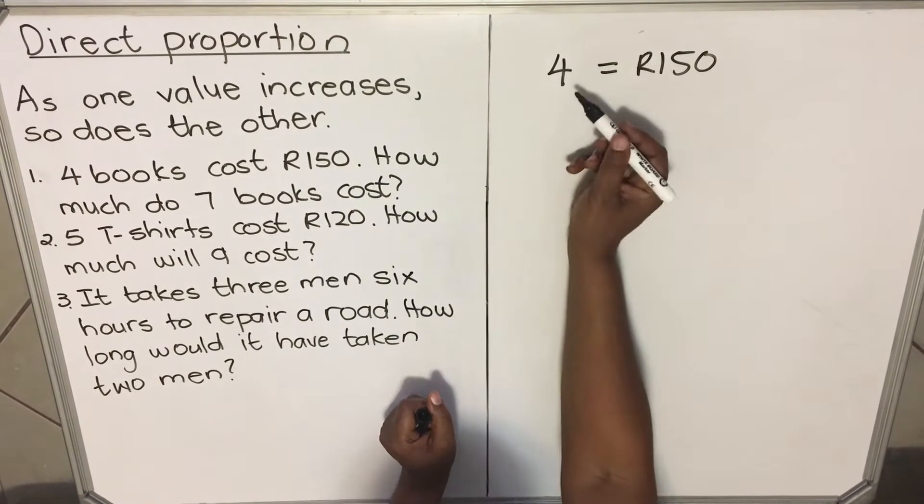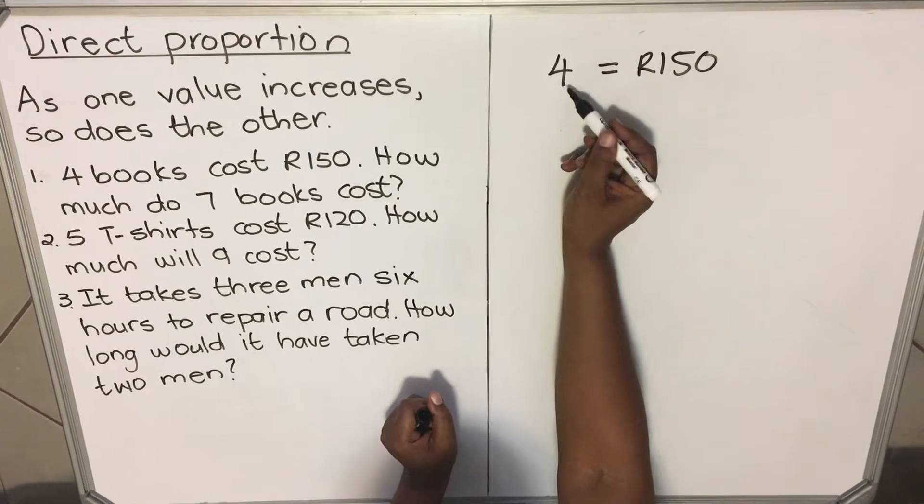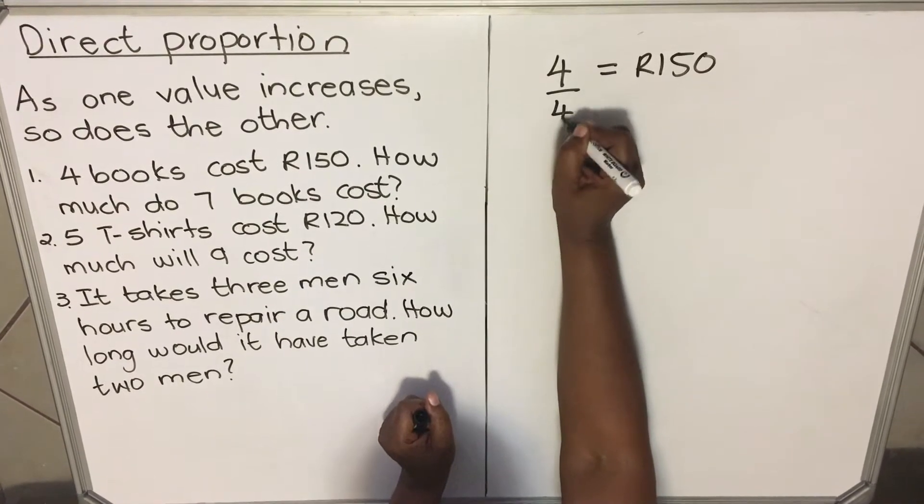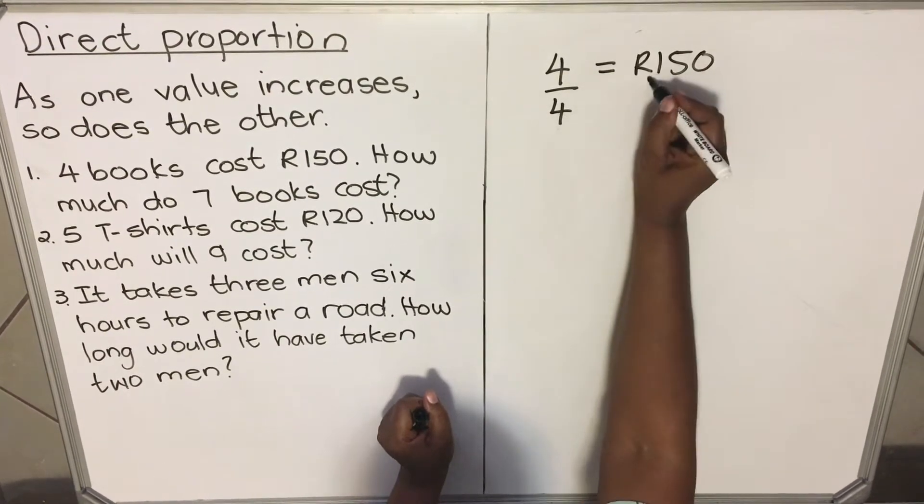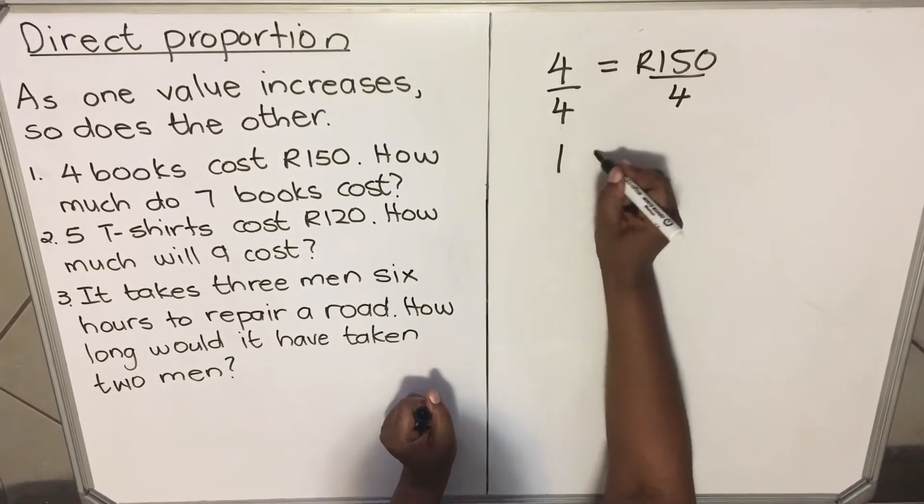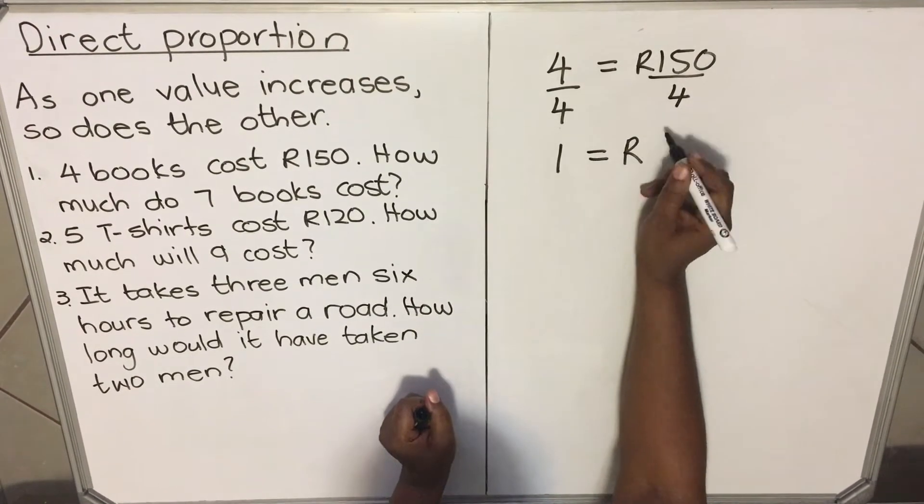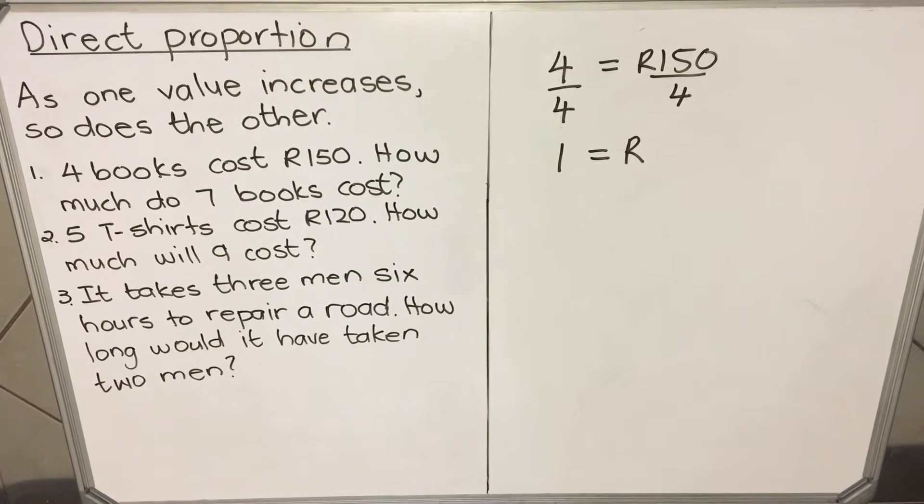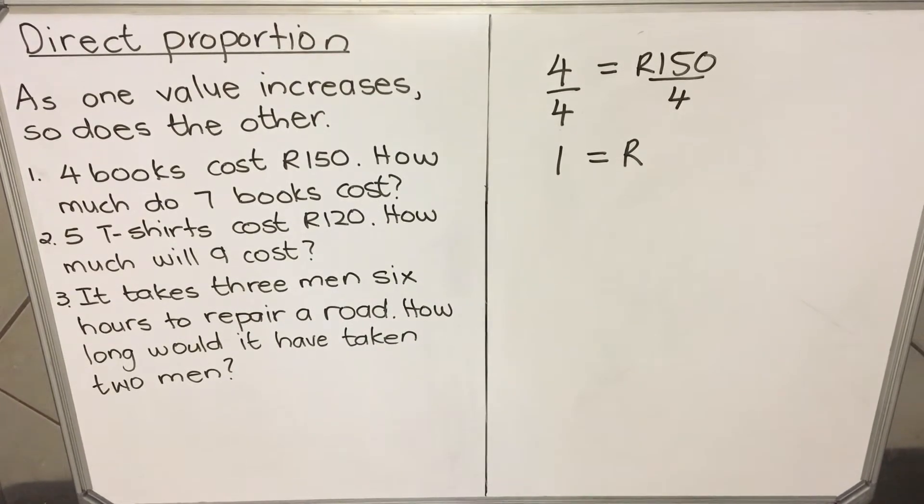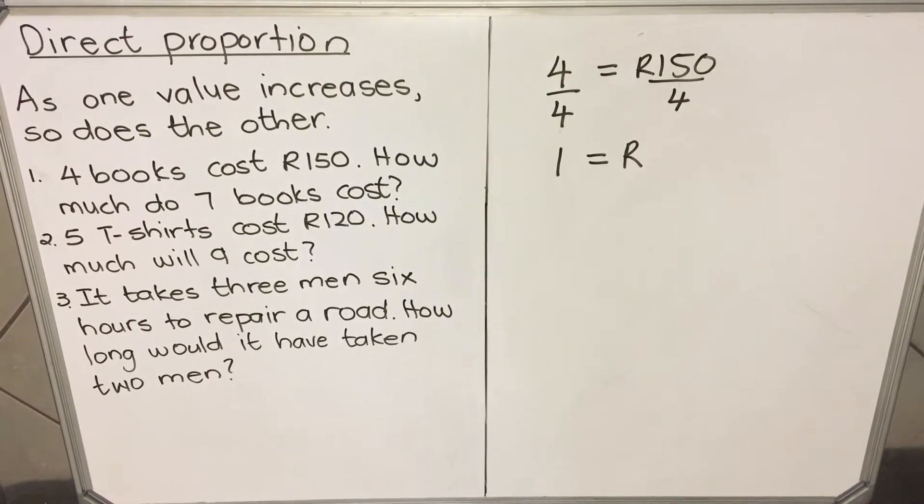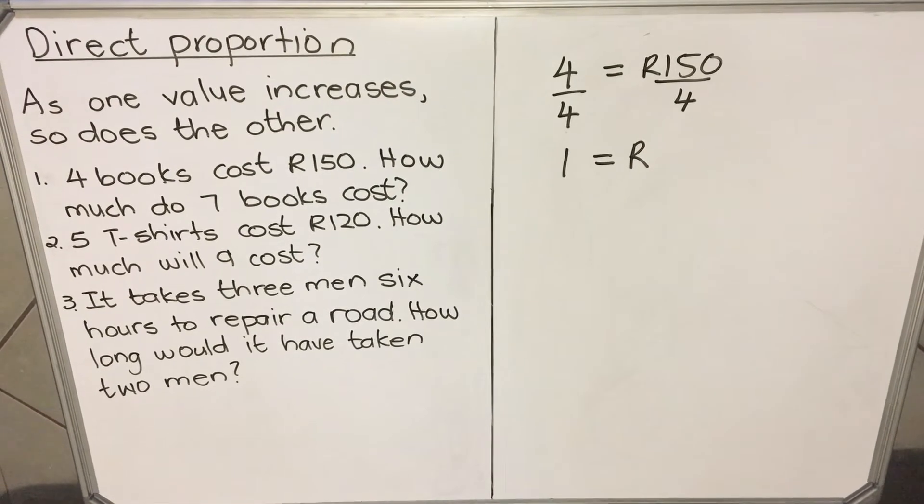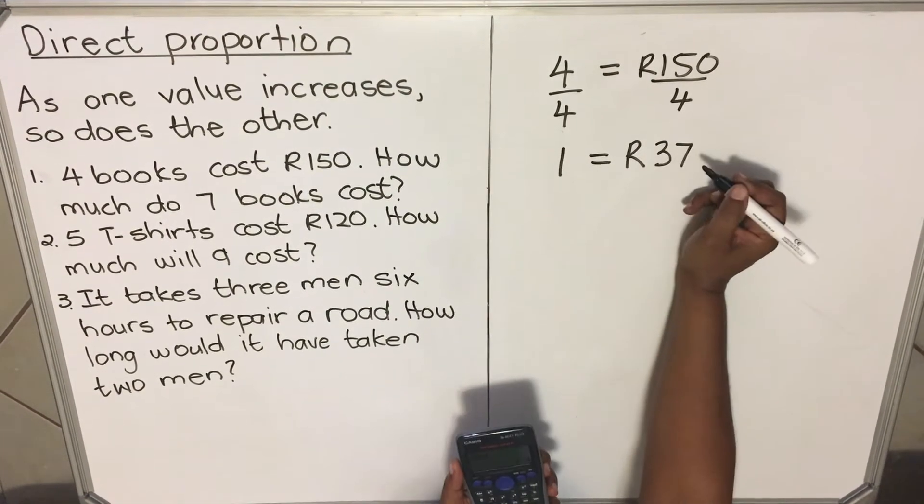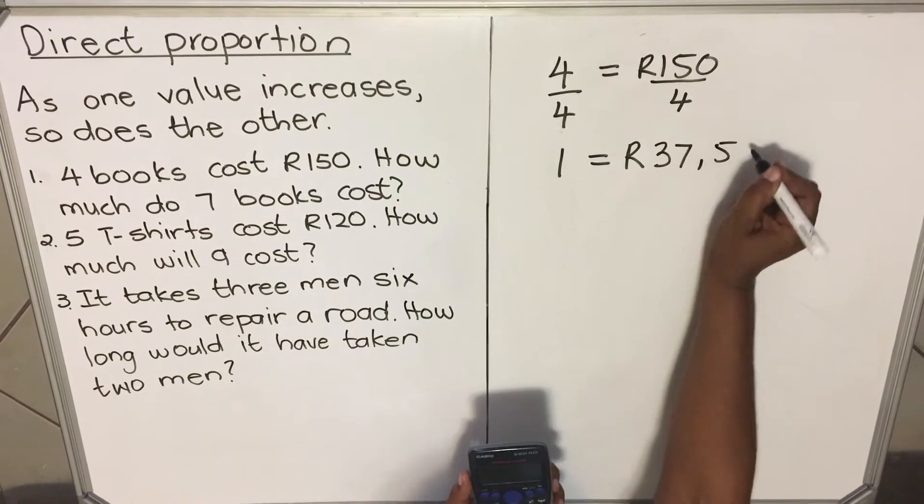How do I get one from four? If I divide four by four, what I do on the left, I do on the right. So one book is going to cost R150 divided by four. R150 divided by four is going to cost R37.50.